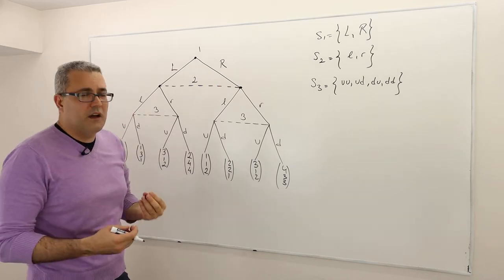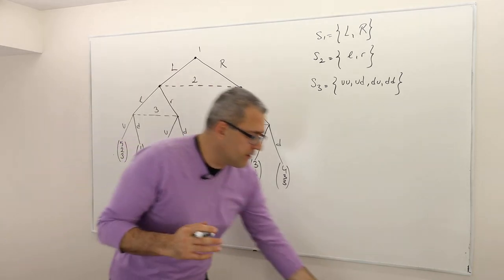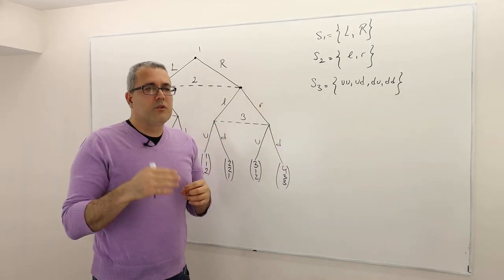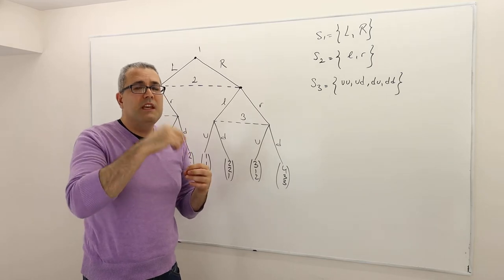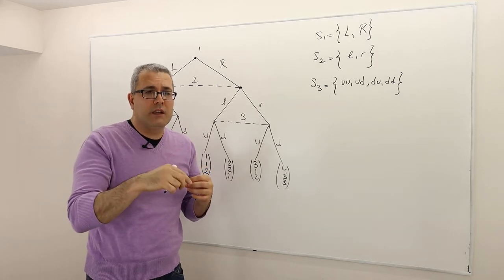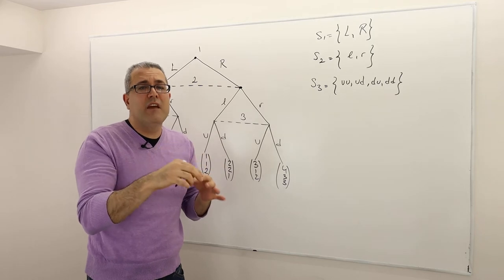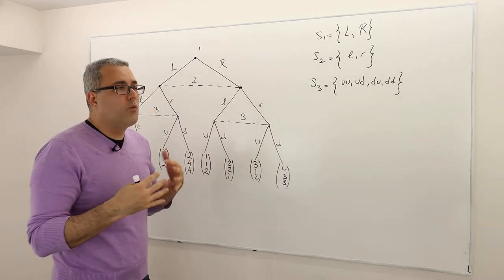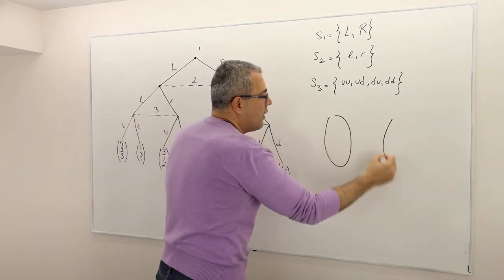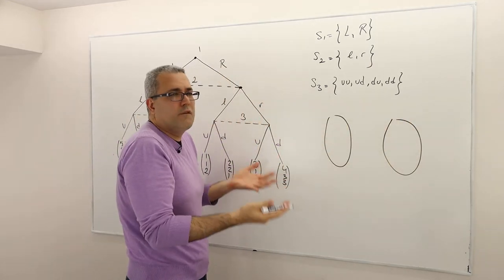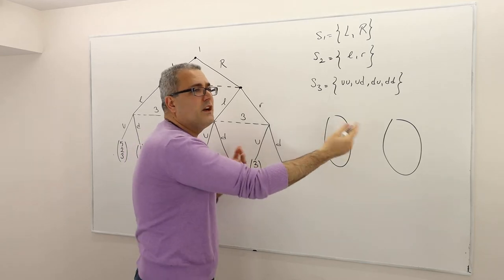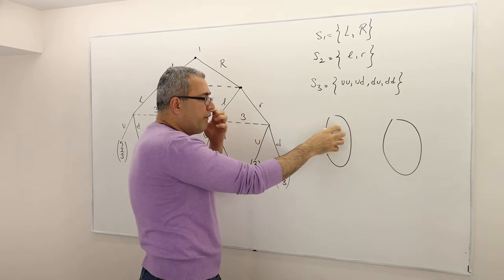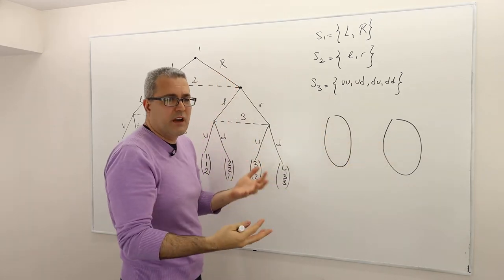How do we really find strategies in general? Remember, a strategy is a function. This definition is very important: a strategy is a function which maps each information set of a player to an action available at that information set. A function maps one set to another. How many functions you can generate depends on the number of elements in the domain and the number of elements in the range.